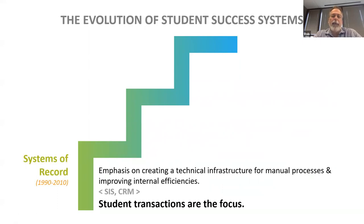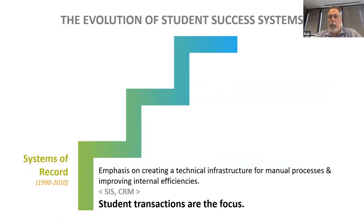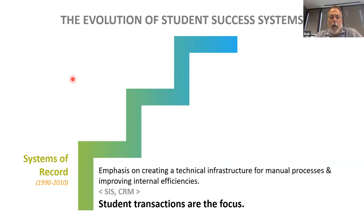The way to think about this is: before roughly 1990, most institutions did not have any consistent automation around their internal processes. Then we saw the rise of what we now call the student information system — ERMs, CRMs, those types of things. Institutions adopted these systems very quickly and began to automate many of the registration activities. Things like payroll processing, course availability, course records, and students' grades began to be collected into these systems of record. These are the foundational elements on which we can demonstrate that the student has completed the required curriculum and we're able to grant them the credentials they've earned.